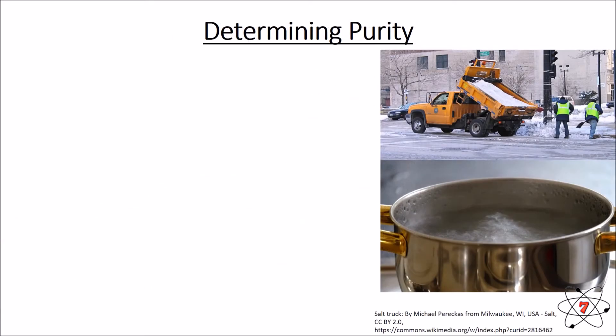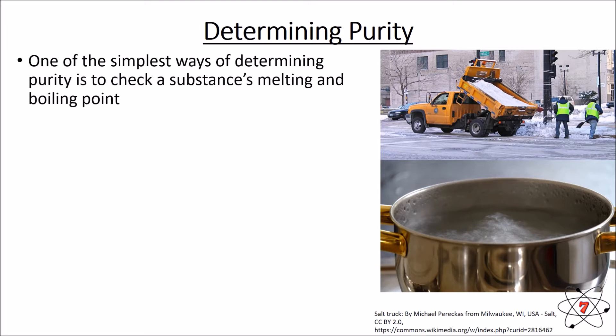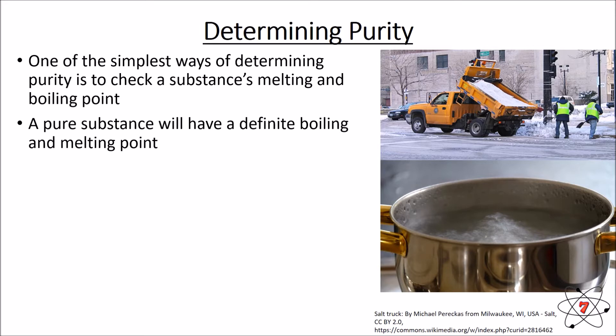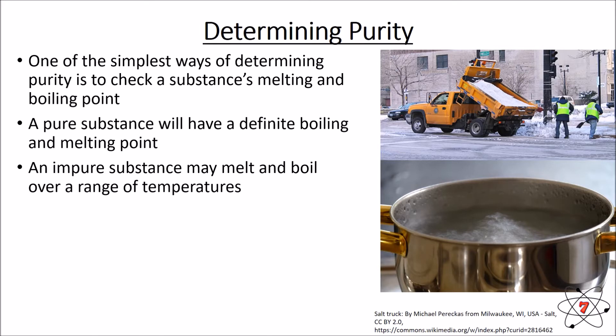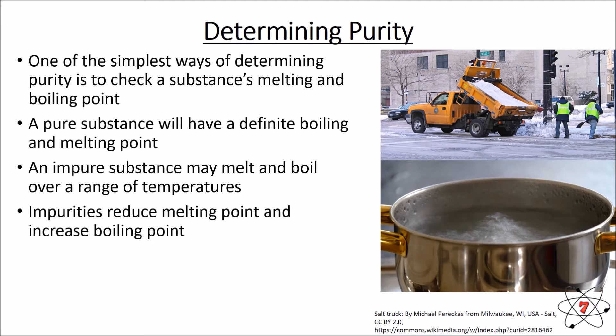We can work out if something is pure through some very simple methods. One of the simplest is to check a substance's melting point and boiling point. Pure water boils at 100°C and melts at 0°C — they have a definite boiling point and melting point. But if a substance is impure, it might melt and boil over a range of temperatures, not at exactly those values.